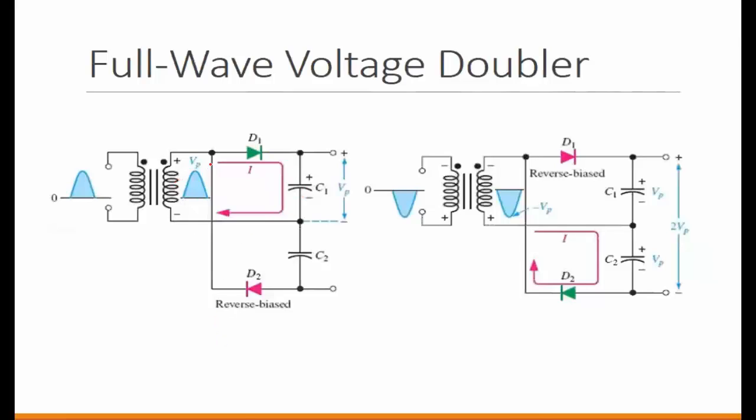So in this case, two positive cycle, D1 forward biases, so that's the charging path as indicated here for the current. So as the D1, because this point is being feeding to D1, the same point is feeding to D2. So when the D1 forward biases for positive cycle, the D2 will reverse bias, but the C1 will be getting the charge.